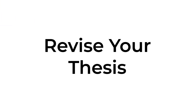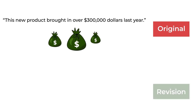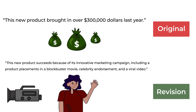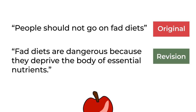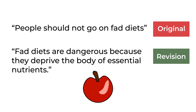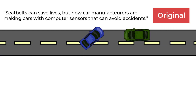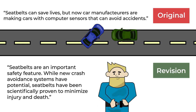Here are some examples to help you revise your thesis. This new product brought in over $300,000 last year. An improvement would be: this new product succeeds because of its innovative marketing campaign, including a product placement in a blockbuster movie, celebrity endorsement, and a viral video. People should not go on fad diets. An improvement would be: fad diets are dangerous because they deprive the body of essential nutrients. Seatbelts can save lives, but now car manufacturers are making cars with computer sensors that can avoid accidents. An improvement would be: seatbelts are an important feature. While new crash avoidance systems have potential, seatbelts have been scientifically proven to minimize injury and death.